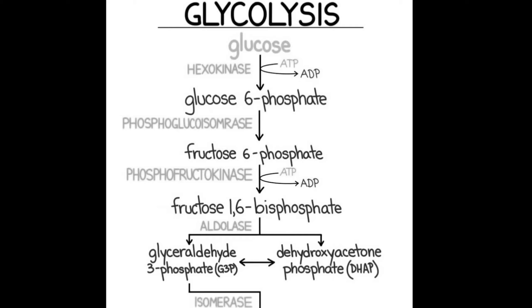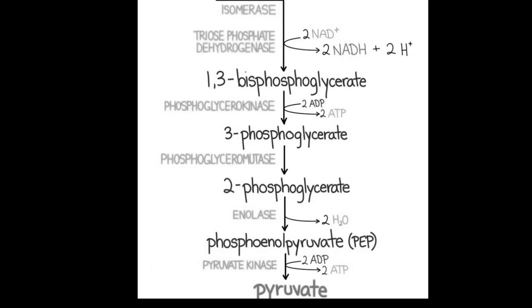Now dealing with the second half called the payoff phase of glycolysis. Each molecule of glyceraldehyde-3-phosphate is oxidized and phosphorylated by inorganic phosphate. The enzyme triose phosphate dehydrogenase is working here, which is responsible for the conversion of 2 NAD⁺ into 2 NADH + H⁺. We will be calling them as NADH + H⁺.